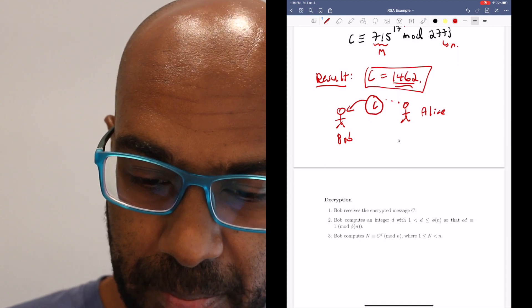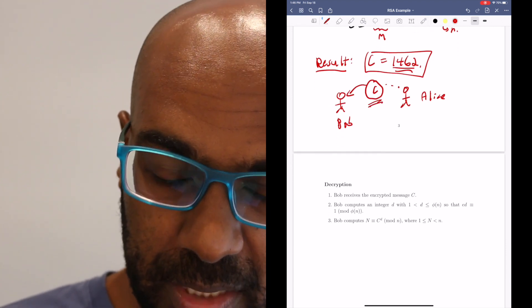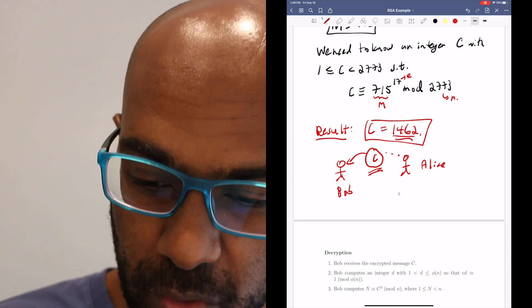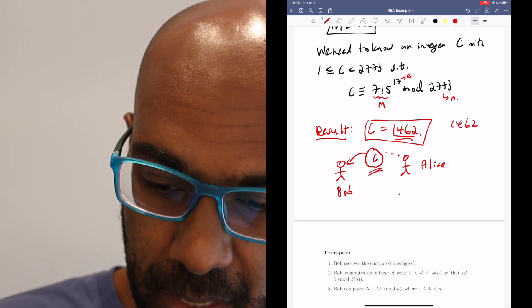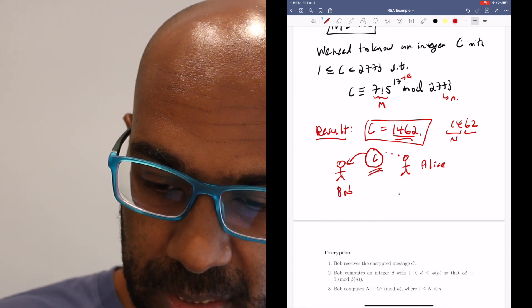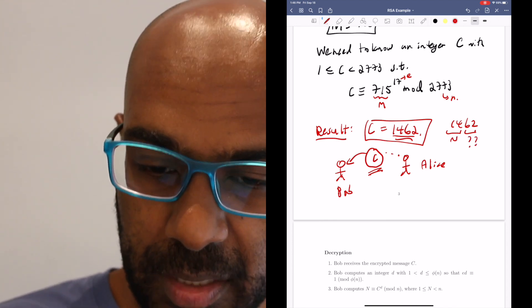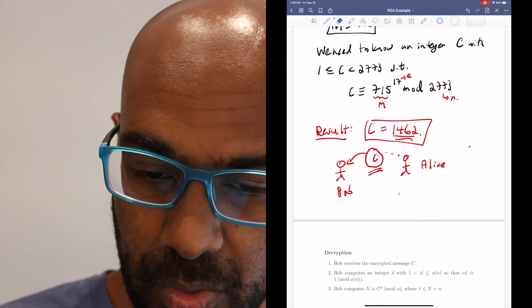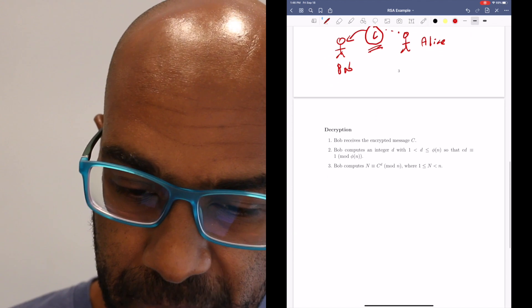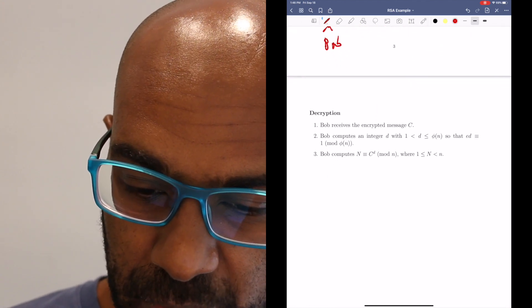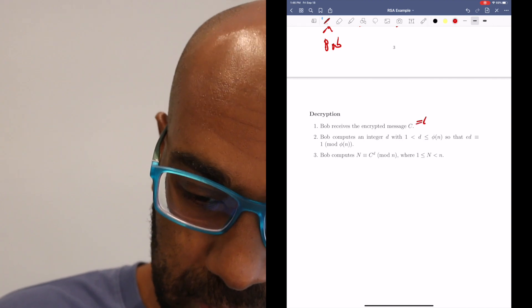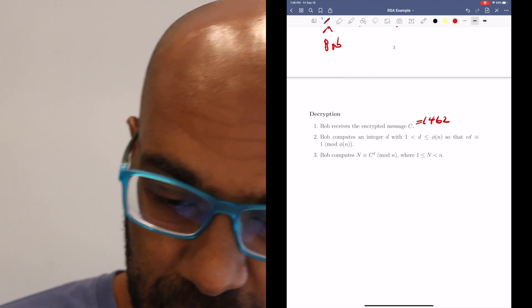Now that Bob receives this, what he really wants is the original message. If Bob tried to use the cipher to figure out what 1462 was, he'd be like, what's the 14th letter of the alphabet? Maybe it's N. And then the 62nd letter? Question mark. Not clear. So anybody who tries to intercept and figure this out will have no luck. That's okay though, because Bob has a process. Bob receives the C, which is 1462, and then he has to do some work.